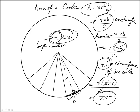So this is a sort of a conceptual proof for why the area of the circle is pi r squared. And that completes this video.